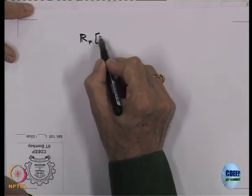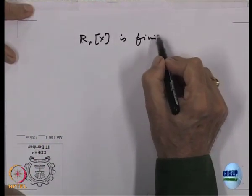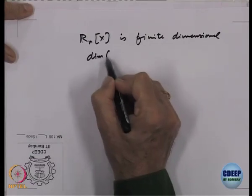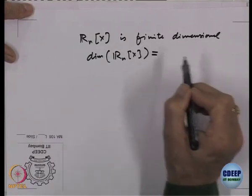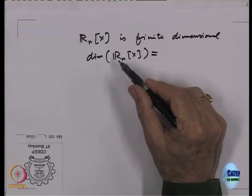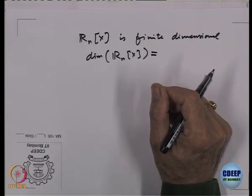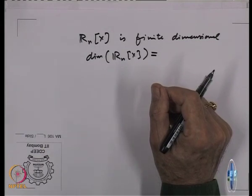If it is infinitely generated, we say it has infinite dimension — it is an infinite dimensional vector space. So in vector spaces there are finite dimensional ones. Let us show that R_n(x) is finite dimensional. So R_n(x) is finite dimensional — what is the dimension? We have a generator for R_3(x): the generating set is 1, x, x squared, x cubed — four of them — and they were linearly independent.